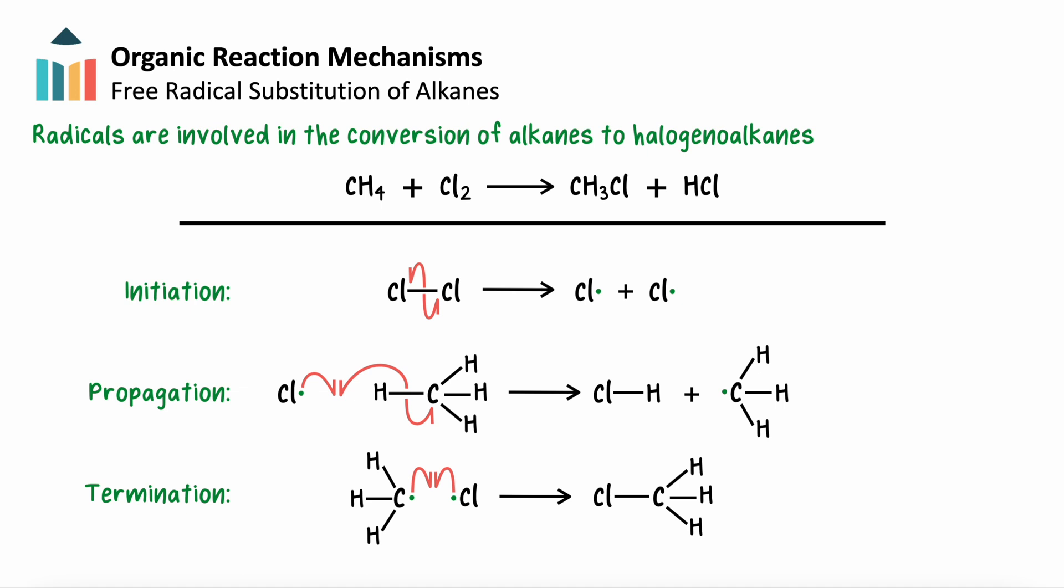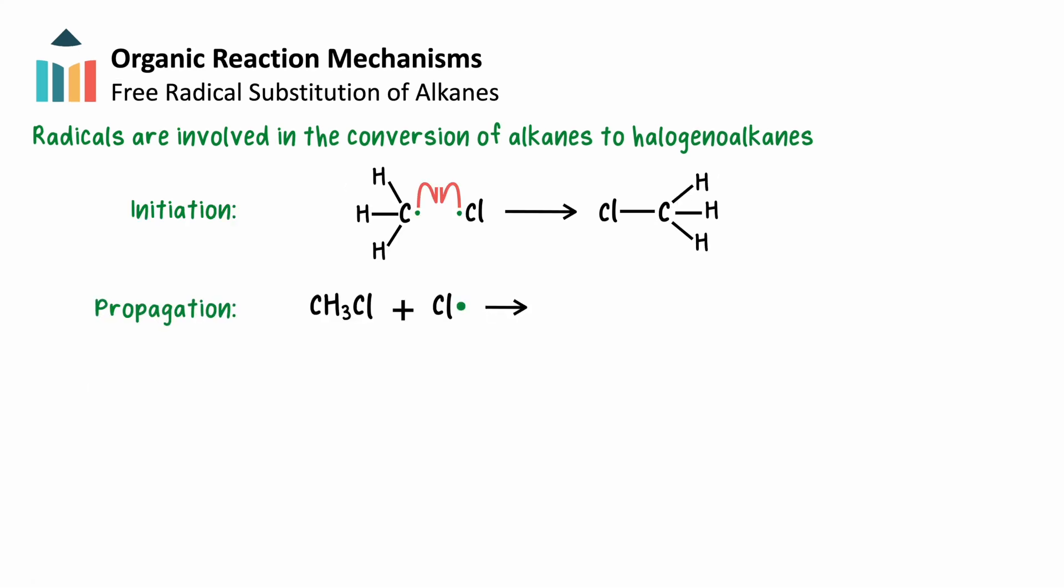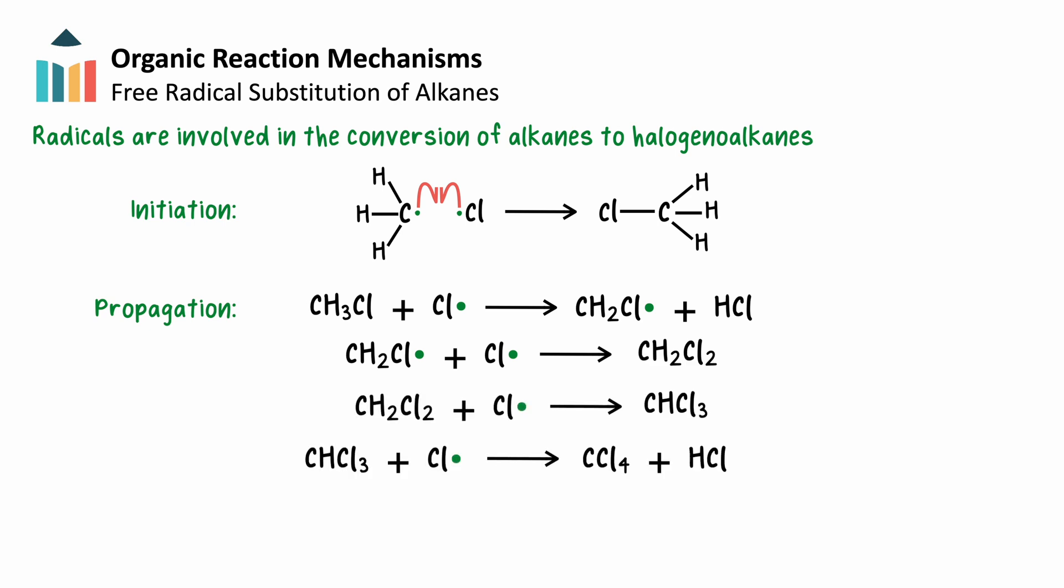Free radical substitution reactions like this can produce a range of products and can be difficult to control. In this process, if there were chlorine radicals to react with, the products of our termination step could have created another chain reaction, leading to the unwanted production of tetrachloromethane.